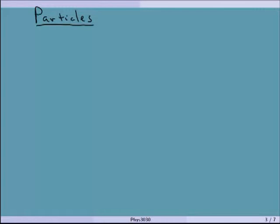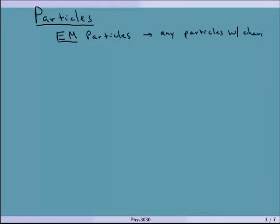Now let's talk about the particles involved with all of these forces. From the 1920s through the 1990s, we were finding more and more new particles and trying to understand how they all fit together. We'll run through the different forces again and talk about what particles each force involves. The electromagnetism particles are any particles with charge.